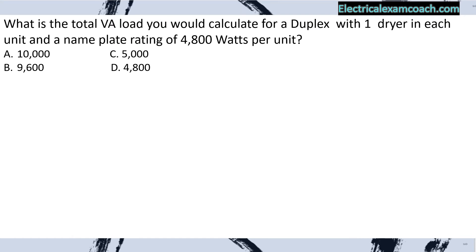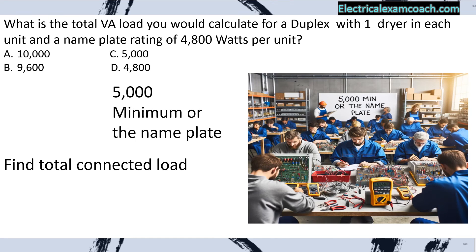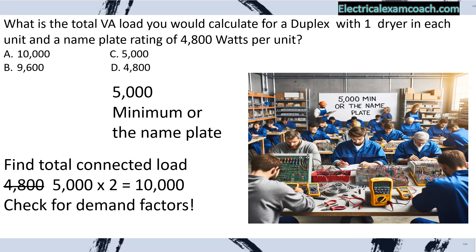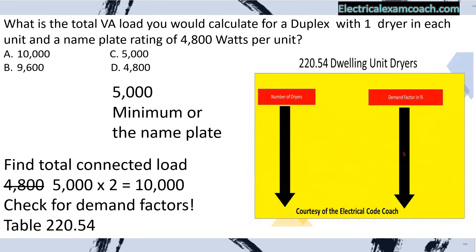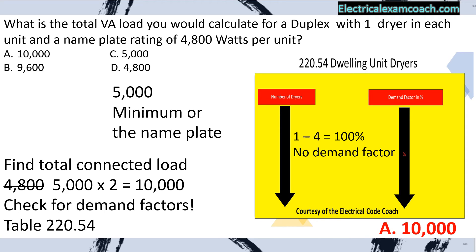What is the total VA load for a duplex with one dryer in each unit and a nameplate rating of 4,800 watts per unit? We apply the 5,000 VA minimum, so the 4,800 is out and 5,000 is in. We multiply by our two units, giving us 10,000 VAs total connected load. Checking table 220.54, one through four dryers is calculated at 100%. Answer: A.